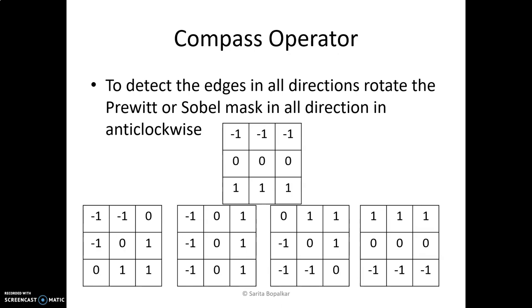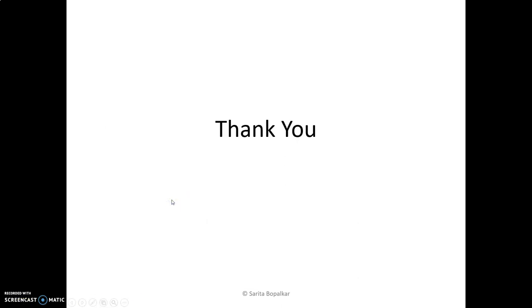In this video, we discussed the Robert mask, Prewitt mask, and Sobel mask. The Robert mask is a 2×2 mask showing that cross differences give better results than vertical and horizontal differences. Prewitt and Sobel use 3×3 masks which give better results, and they also perform a smoothing operation along with edge detection. All of these are first derivative masks. Thank you.